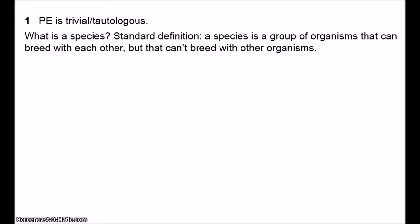The standard definition of species in evolutionary theory comes from Ernst Mayr, and it's known as the biological species concept. Mayr defines species in terms of reproductive isolation — a species is a group of organisms that can interbreed with each other but cannot interbreed with any other organisms. What makes two different kinds of dog the same species is that if they were to mate they would produce fertile offspring. What makes a human and a chimpanzee different species is that if they tried to mate they wouldn't produce any offspring.